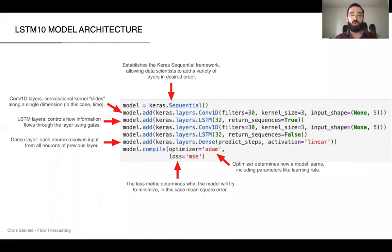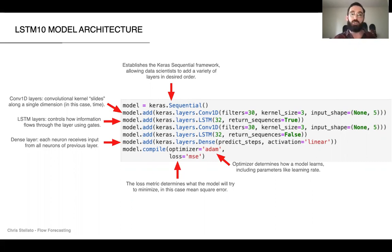Here's a quick look at the model architecture. We won't go too deep, but basically it's a Keras sequential model that allows data scientists to build the model with layers of their choosing and define their own parameters.